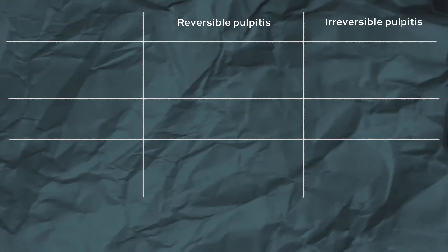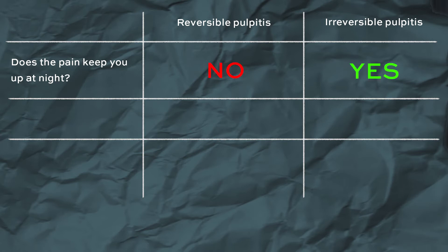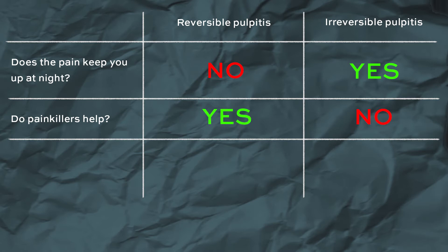There are a few questions you can ask your patients to differentiate whether it's reversible or irreversible pulpitis. Does the pain keep you up at night? If it does, then it's irreversible pulpitis. Do painkillers help? If they don't, again it's irreversible pulpitis. Do cold drinks alleviate the pain? They tend to with irreversible pulpitis. Sometimes you might see a patient with a large caries lesion that's already reached the pulp but they don't experience any pain with hot or cold stimuli. This is known as asymptomatic irreversible pulpitis.